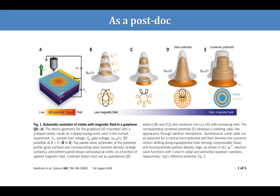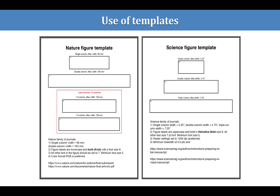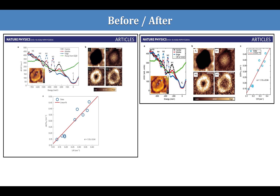Contrast that with a figure I made as a postdoc — I've maximized the figure real estate without cluttering the image. The lesson I learned was to create journal templates for myself. I've created artboards with the maximum figure sizes, color modes, and font families for various journals — I'll talk more about using templates in part 5 of the Illustrator workshop. Going back and redoing that figure using journal templates, the result is so much better. I've reduced the scatter plot size while still displaying the same information, maximized figure real estate by increasing the 2D image sizes, and this figure is almost 50% smaller than the original.